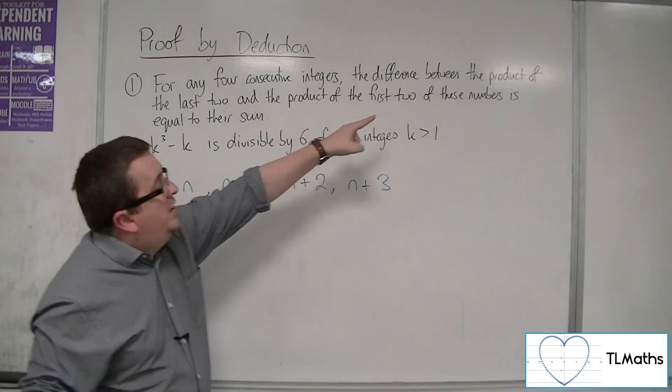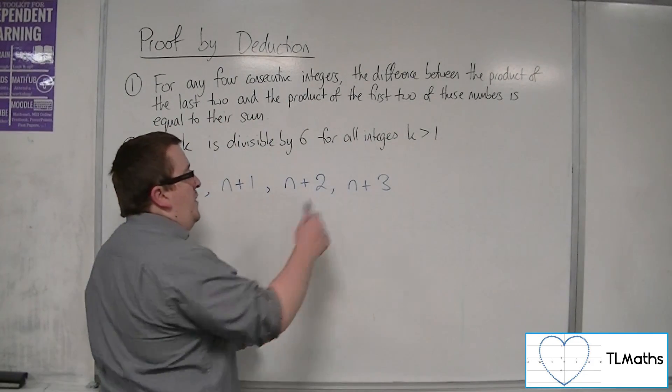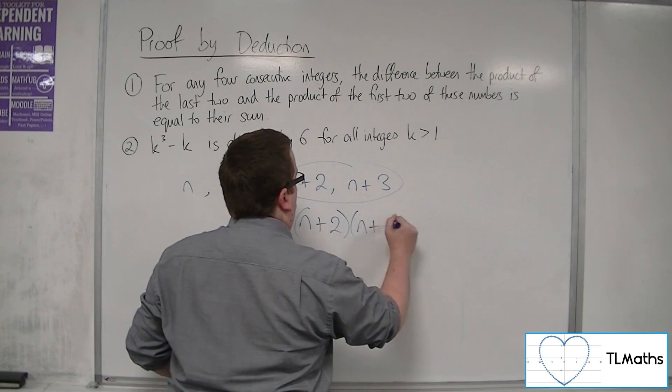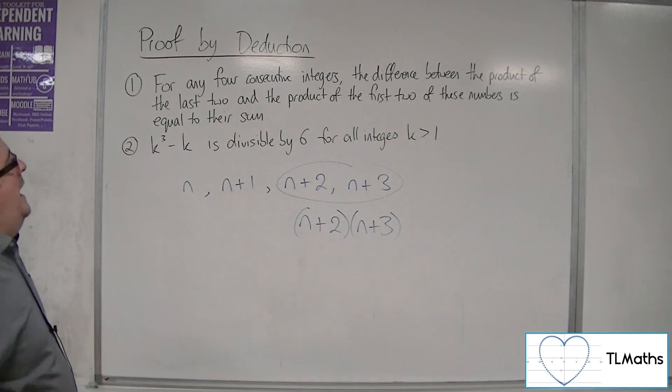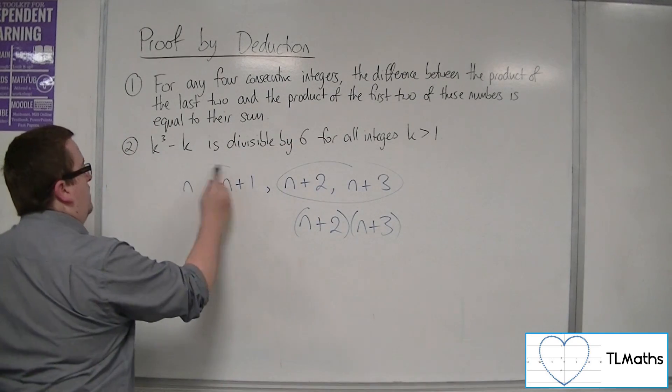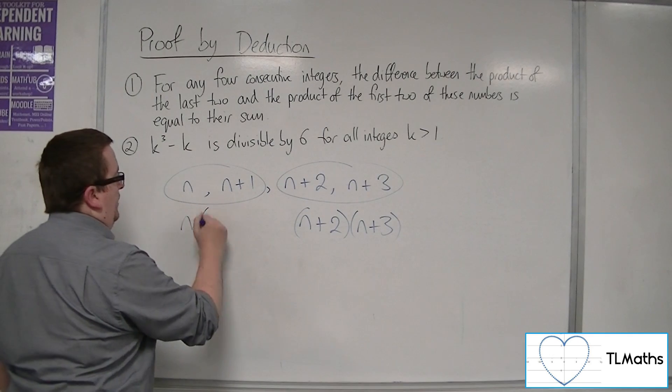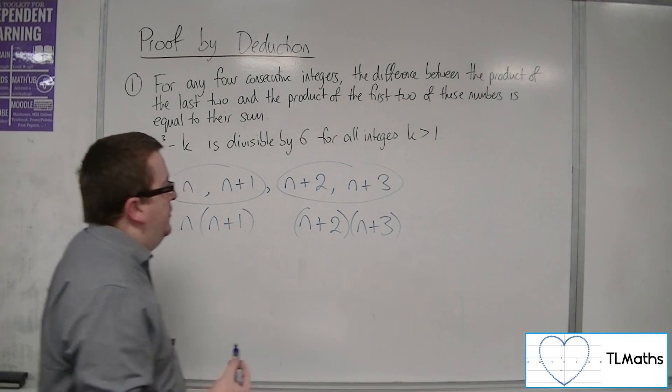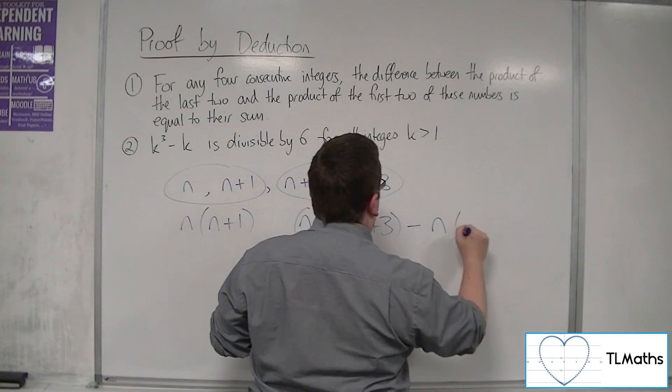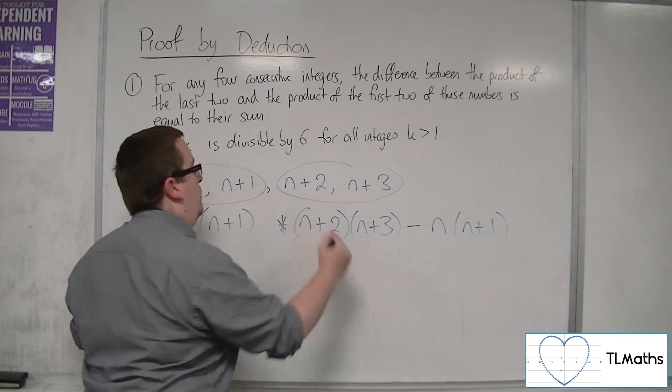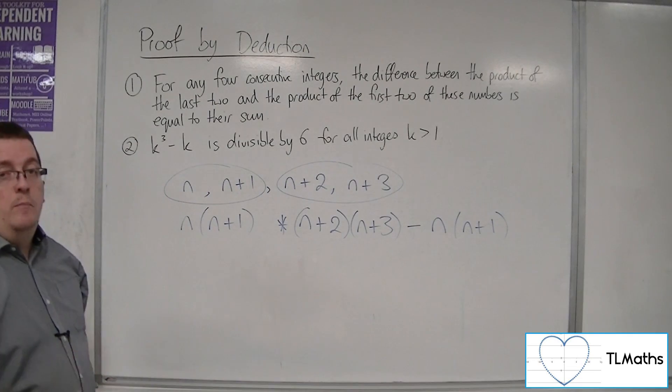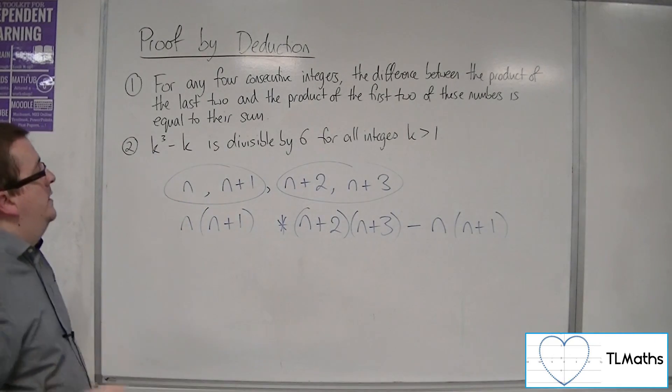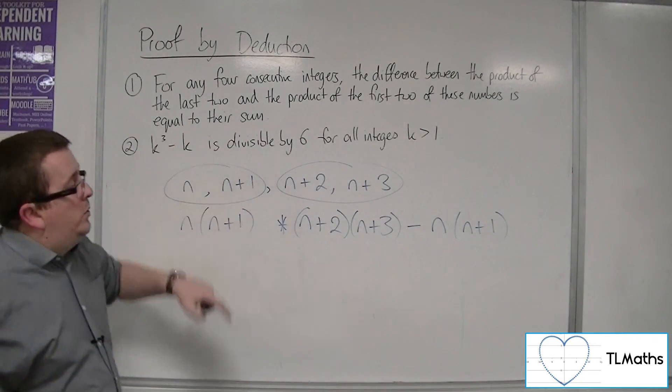So it says the difference between the product of the last two. So we've got to find the product of the last two, n+2, n+3, times them together. And the product of the first two, so we're going to multiply these two. So we want the difference between these two things. Now difference is a subtraction. So what we want is this: n+2, n+3, take away n, n+1. The difference between the product of the last two and the product of the first two. And we want to show that this is going to be equal to their sum.